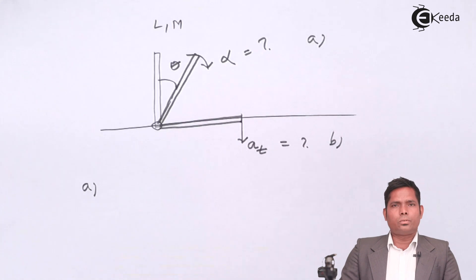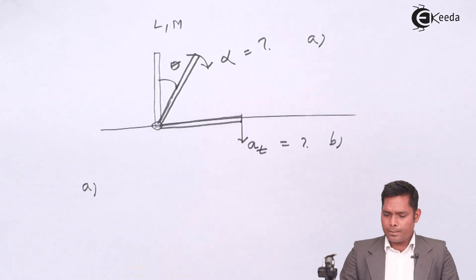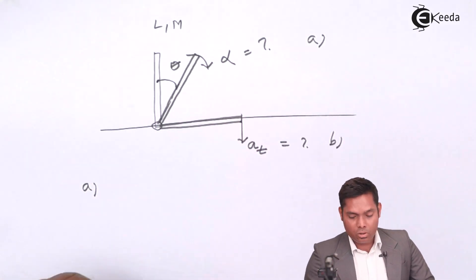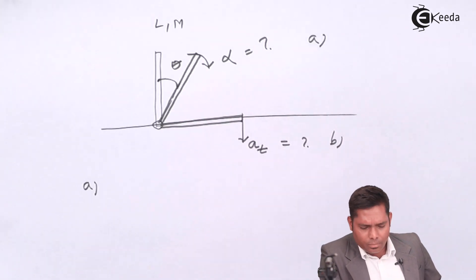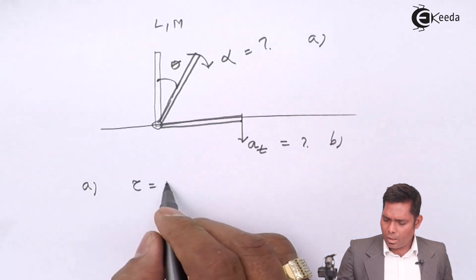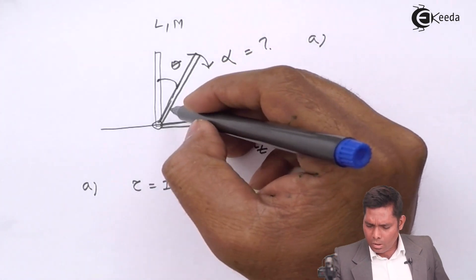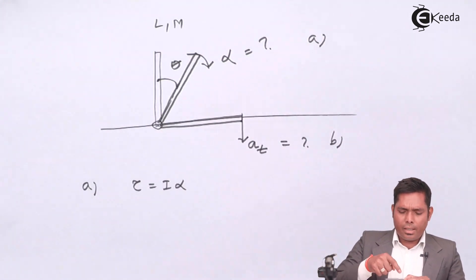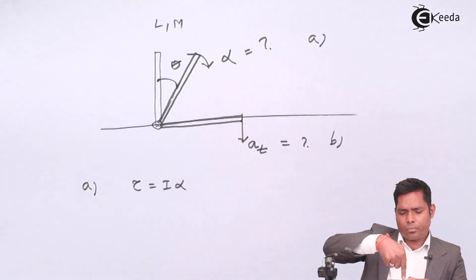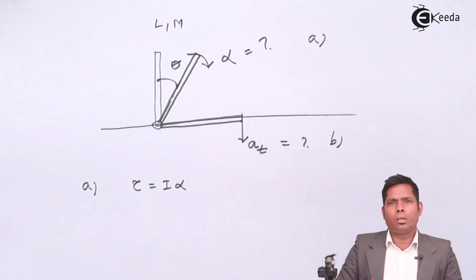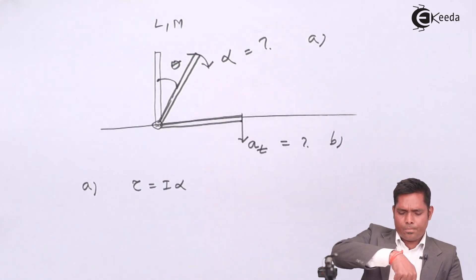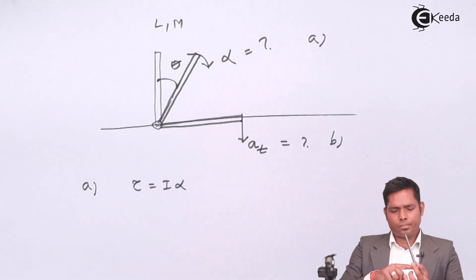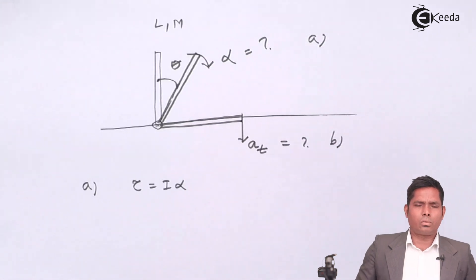To find the solution of the first part, we consider that alpha is caused by the torque, and the torque equals I times alpha. The moment of inertia of the rod about its center perpendicular to the length is ML²/12, and at the free end it is ML²/3. Since the rod rotates about the pivoted end, I equals ML²/3.